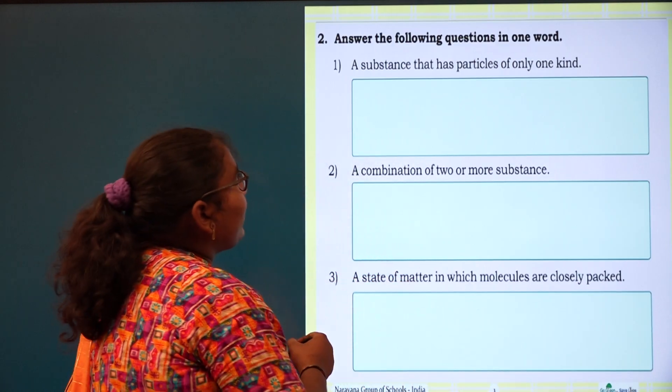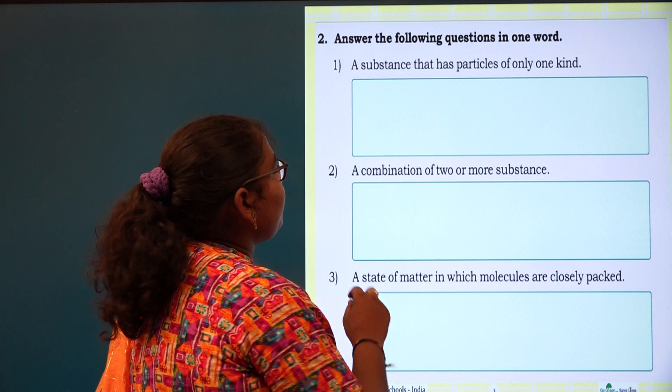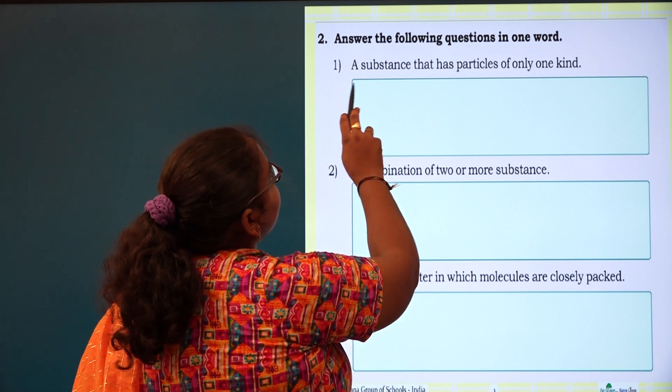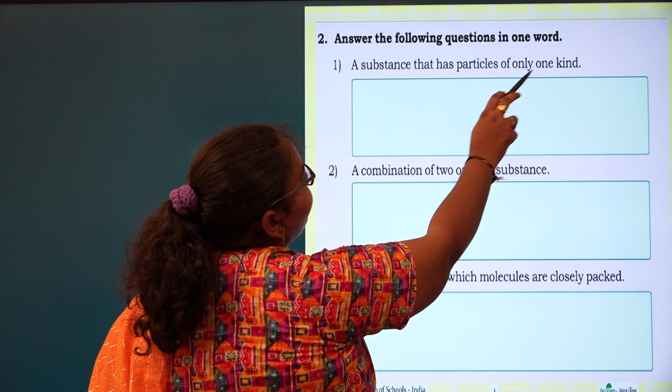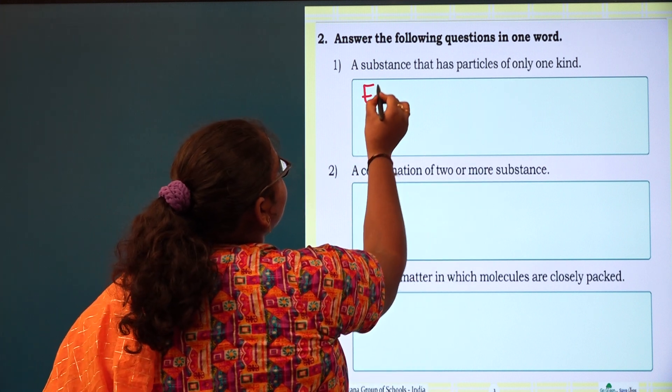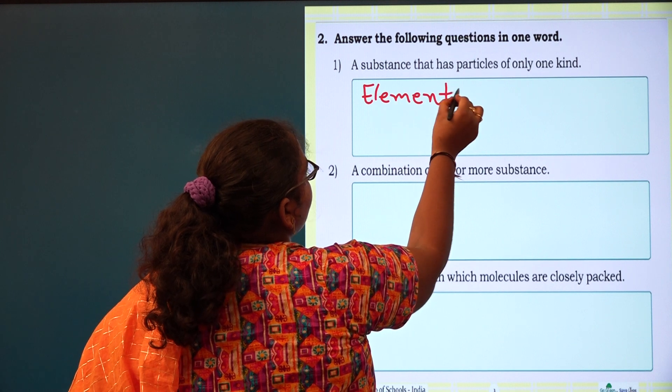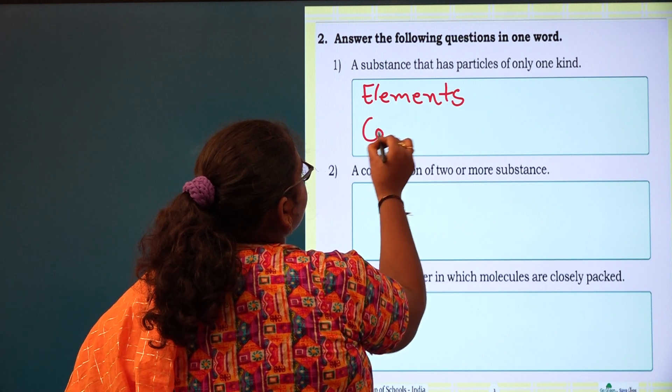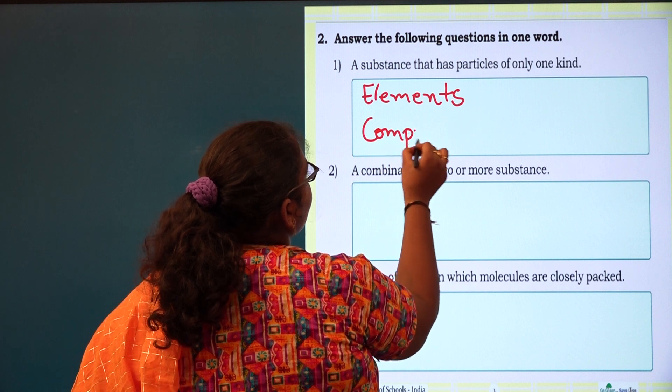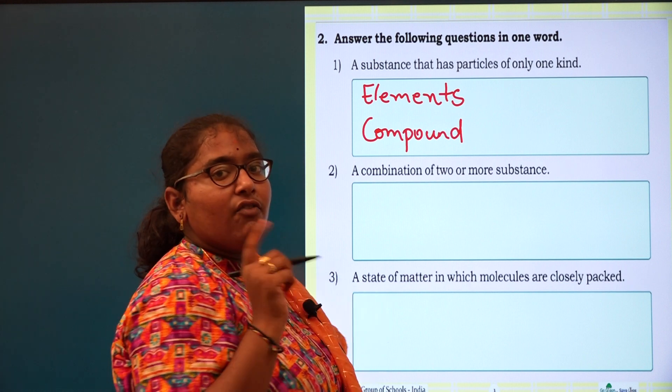Coming to the second one, answer the following questions in one word. First question: a substance that has particles of only one kind. What are they? Elements, compounds. Elements and compounds have particles of only one kind.